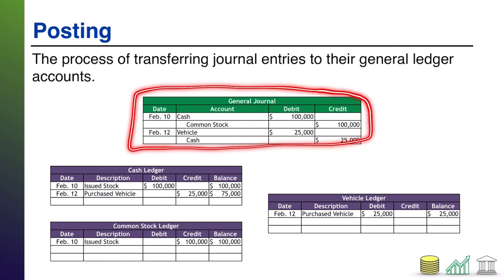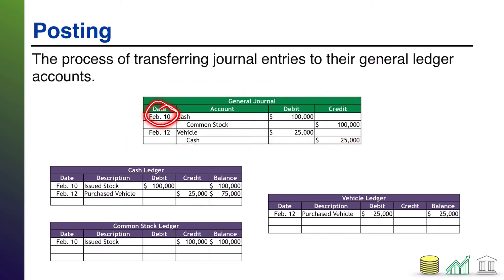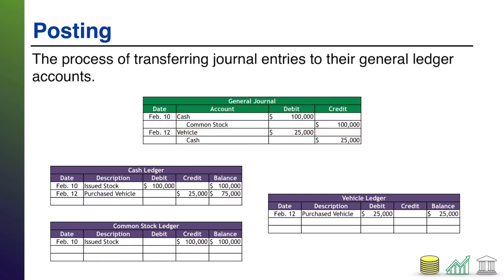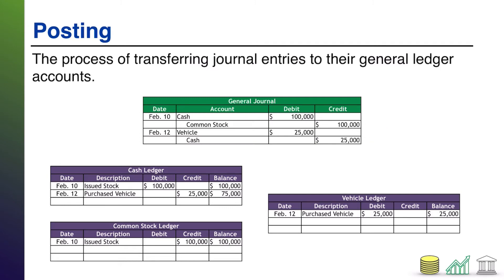From our general journal, we have two journal entries: one on February 10th and one on February 12th. On February 10th, we debit cash and credit common stock. Using debit and credit rules, this means cash goes up and stock goes up — we issued stock and received cash from investors. On February 12th, we debit vehicle and credit cash. Since both are assets, the vehicle goes up and cash goes down, meaning we bought a vehicle and paid cash for it.